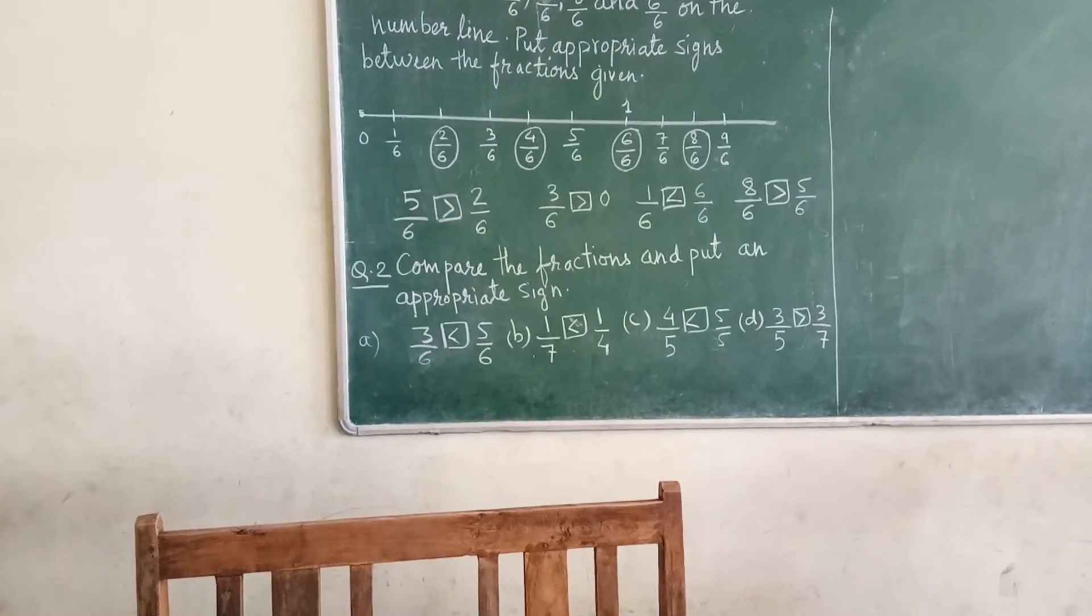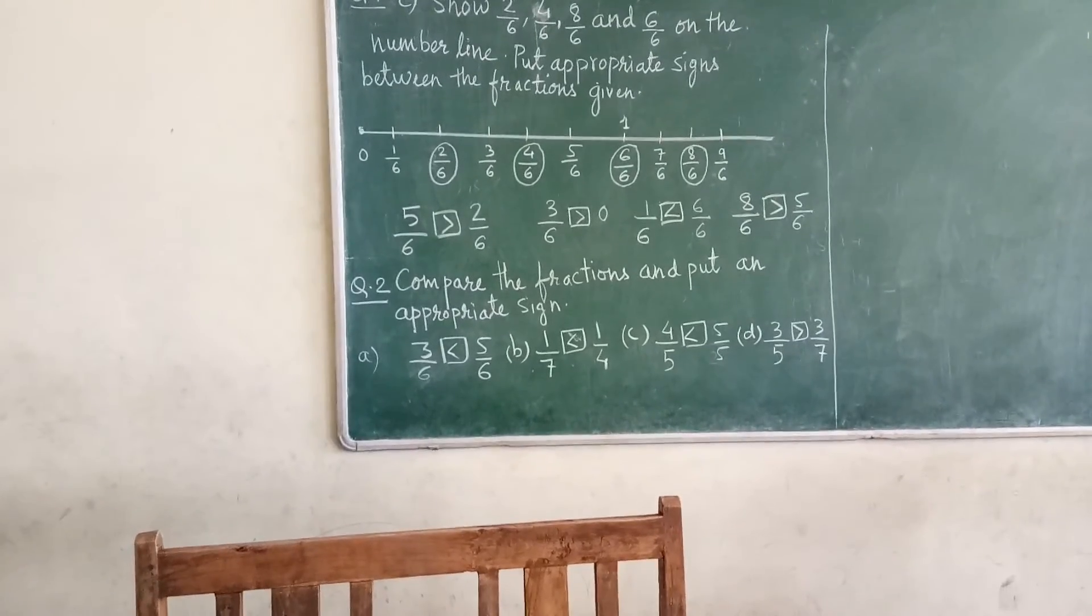In the second, part D again, the condition is same. Numerators are same but denominator is different. So the same rule, whichever has the bigger denominator, the fraction will be smaller. So 3 upon 5.